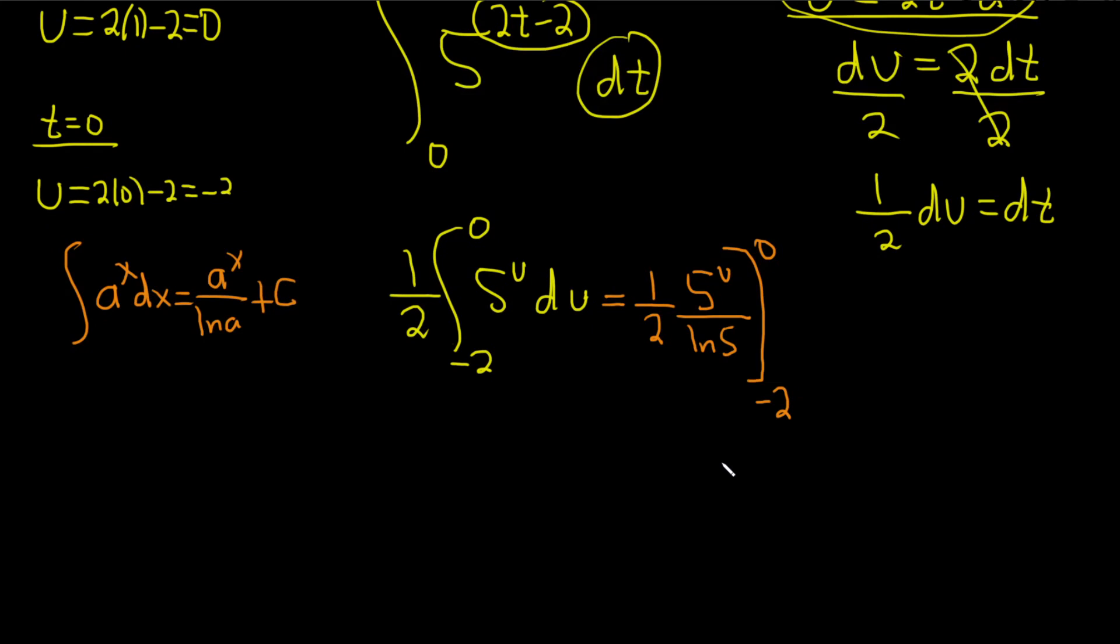So first, we plug in the top number. So this is 1 half. I'll leave it on the outside. 5 to the 0 over the natural log of 5 minus 5 to the negative 2 over the natural log of 5.